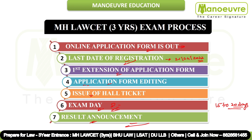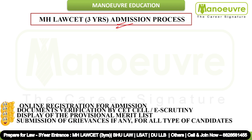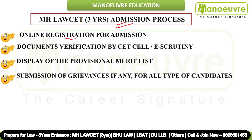So this is about the MH Law CET 3 years exam process. Now let's talk about the MH Law CET 3 years admission process, one by one. The very first step is online registration for admission. After the result announcement, the CAP — Centralized Admission Process — begins. You need to register on the CET cell portal, fill in all details like marksheets, and select your preferred colleges.